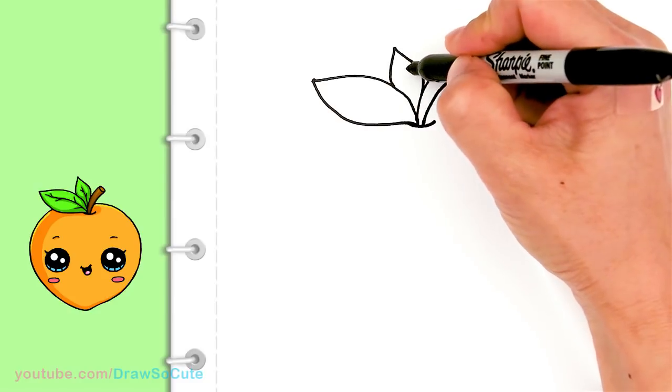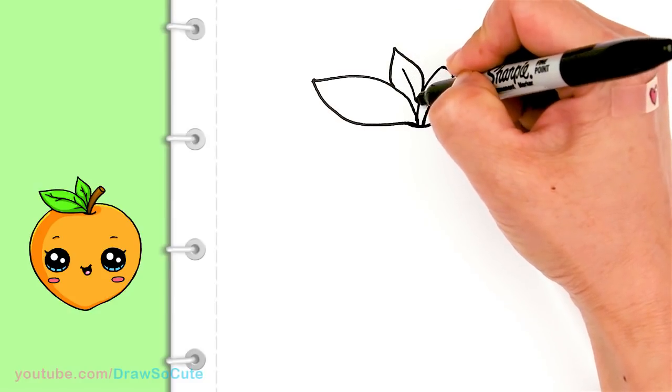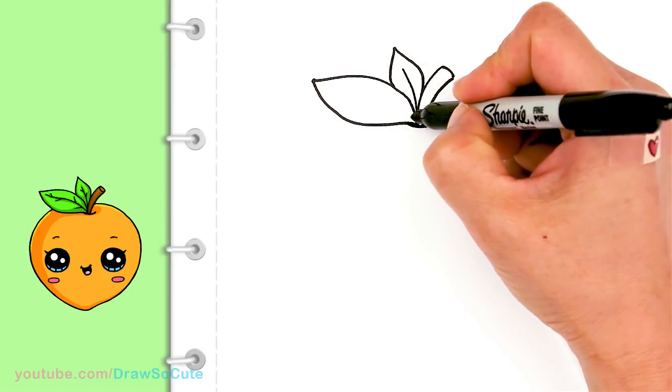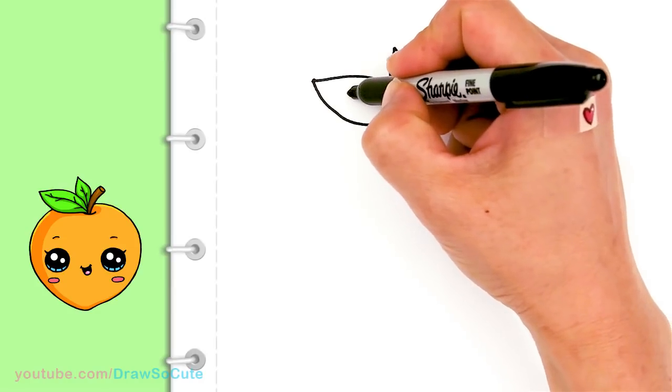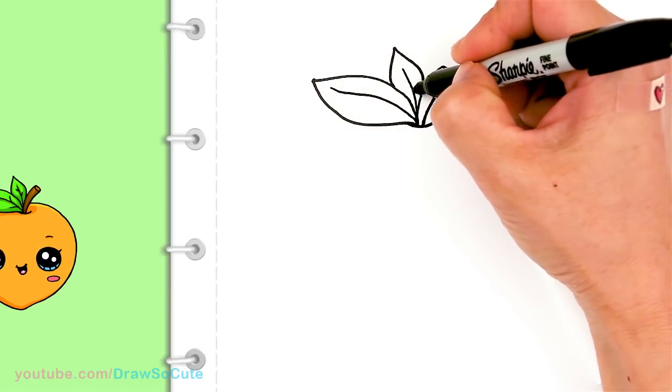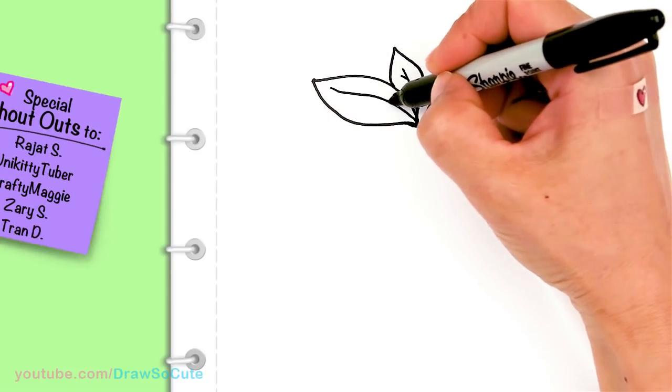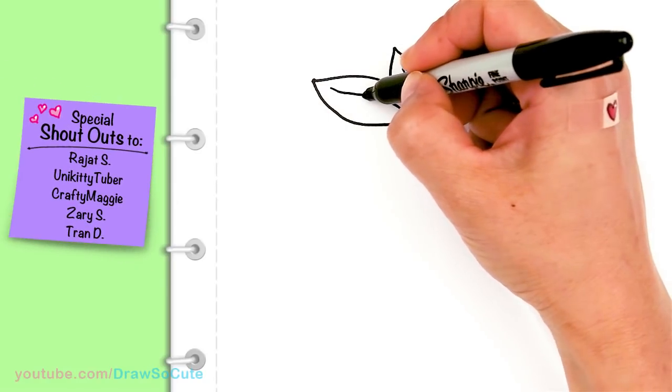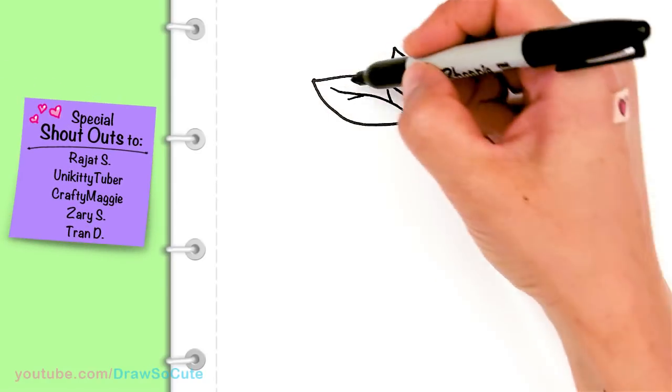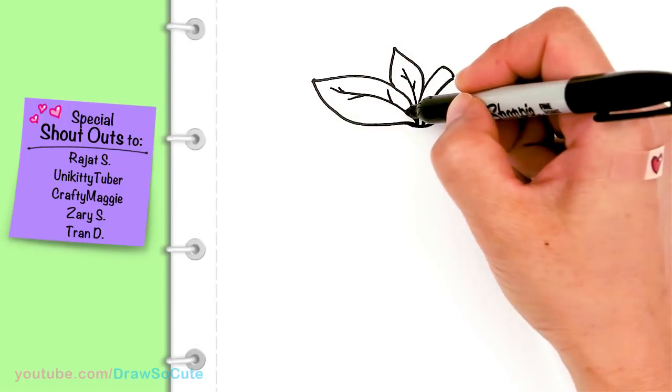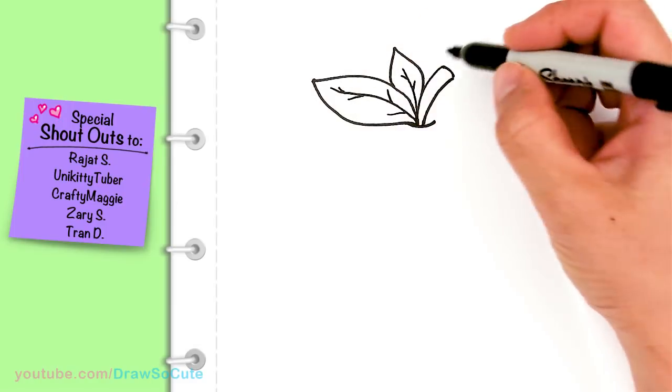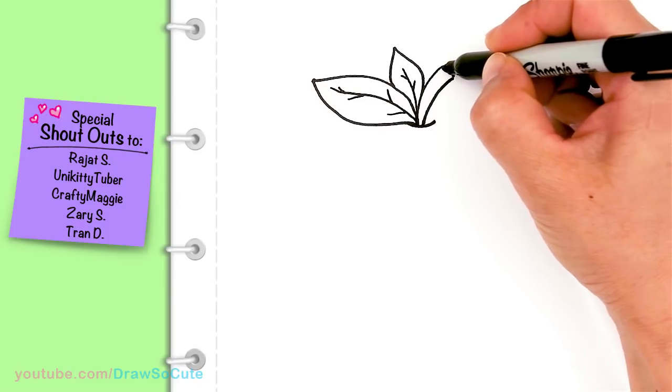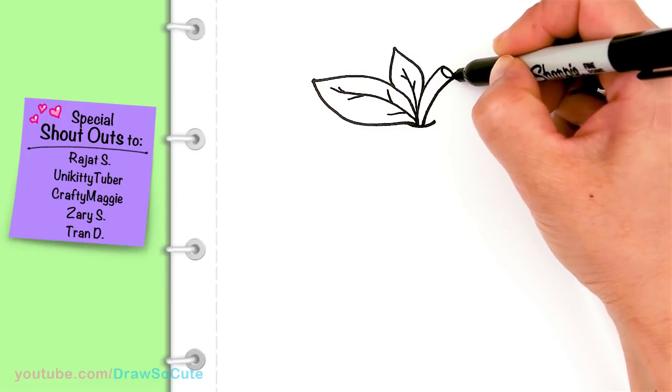Now we can go back into the leaves and draw some details. I'm just going to bring down a curve and a center curve for this leaf. And you can come in here and draw the veins of the leaves. And then for the stem you can add a little curve right here just to give it some dimension.